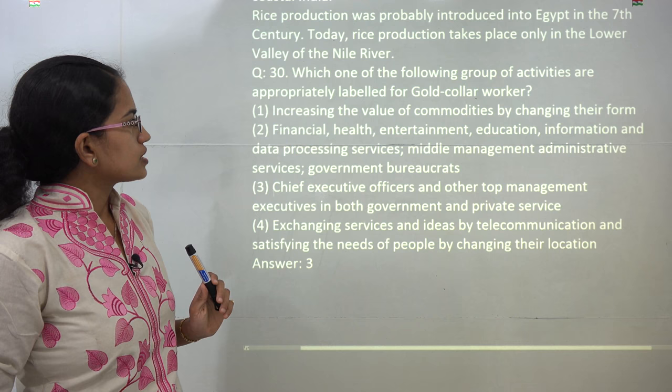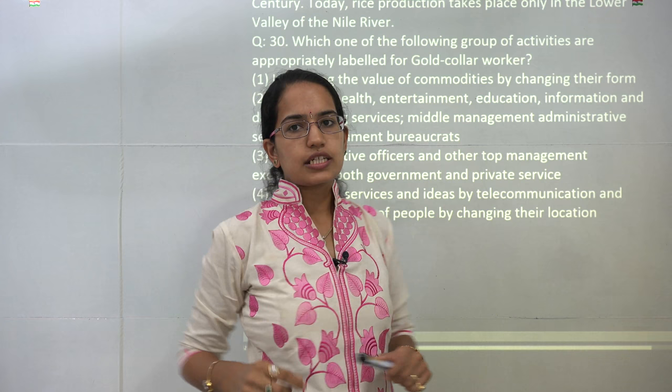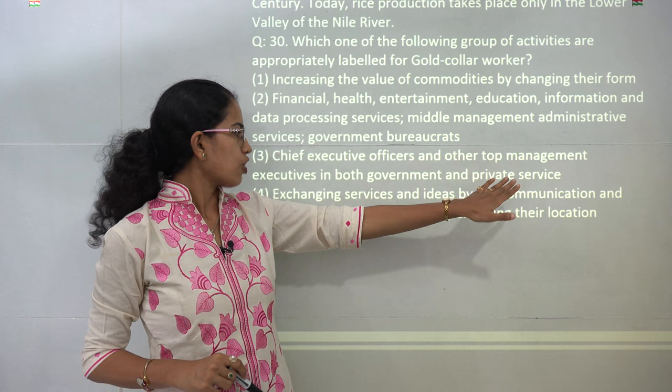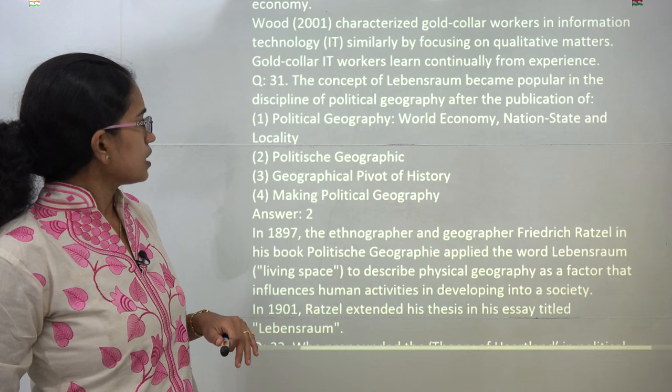The next question talks about the correct definition of gold collar workers. This is the second question on the sectors of the economy. Gold collar workers are basically people involved in quinary activities — those are chief executive officers and top management executives. So 3 is the correct choice here.